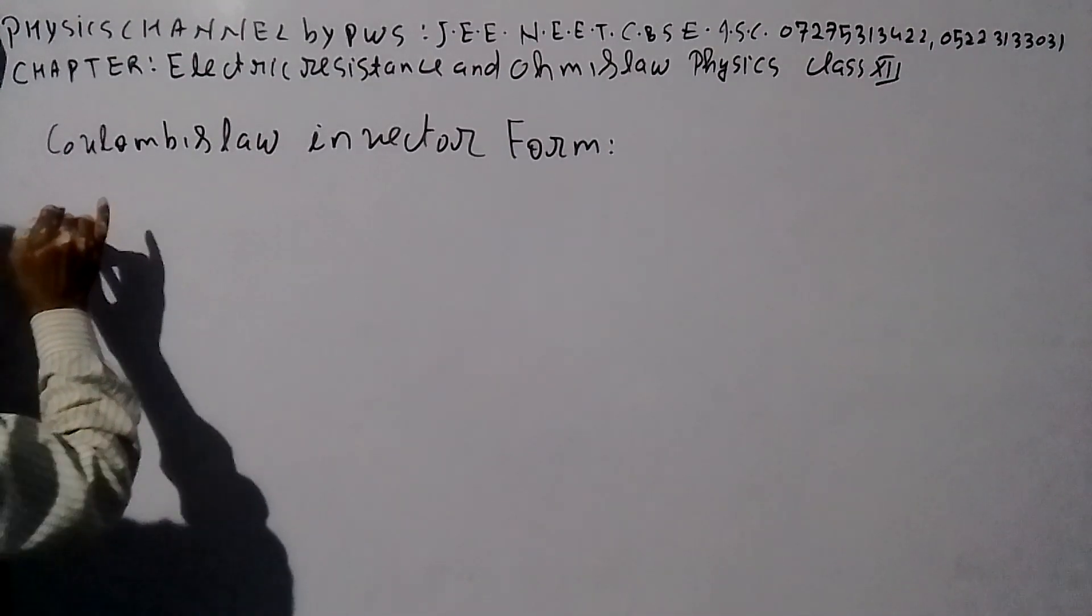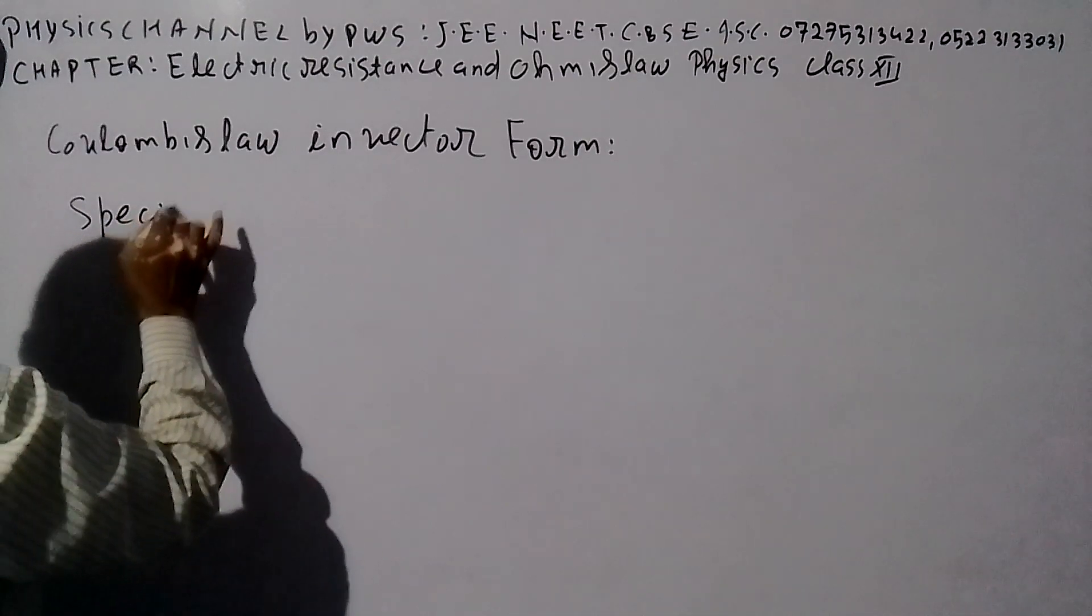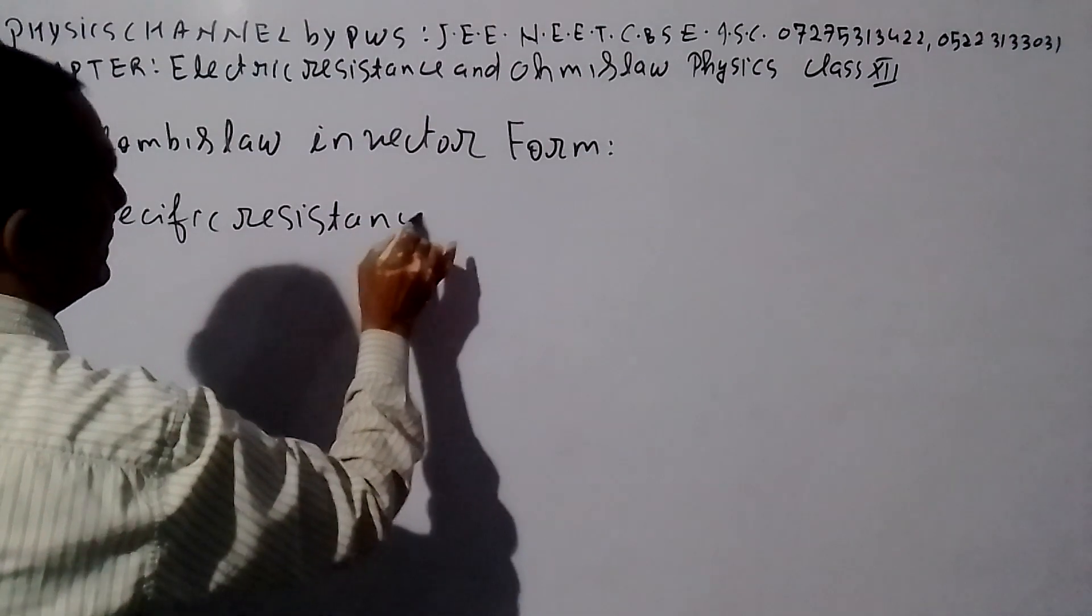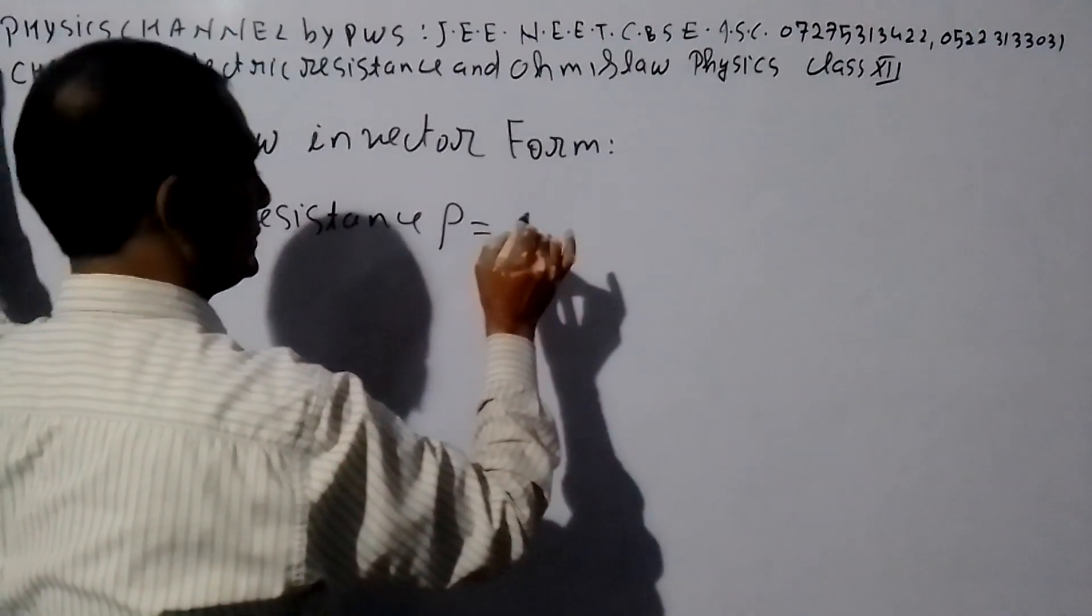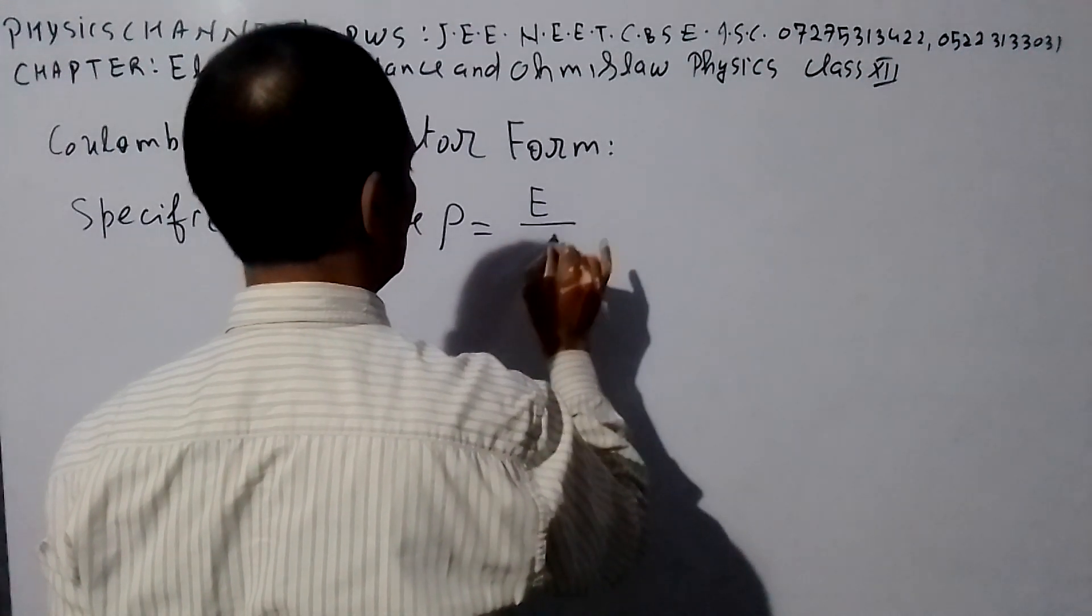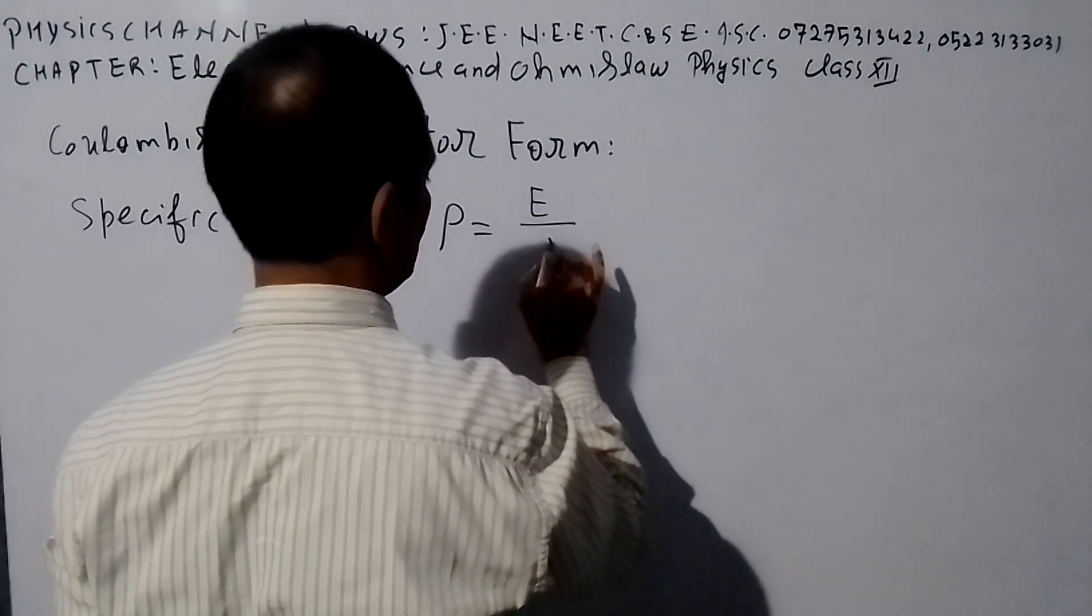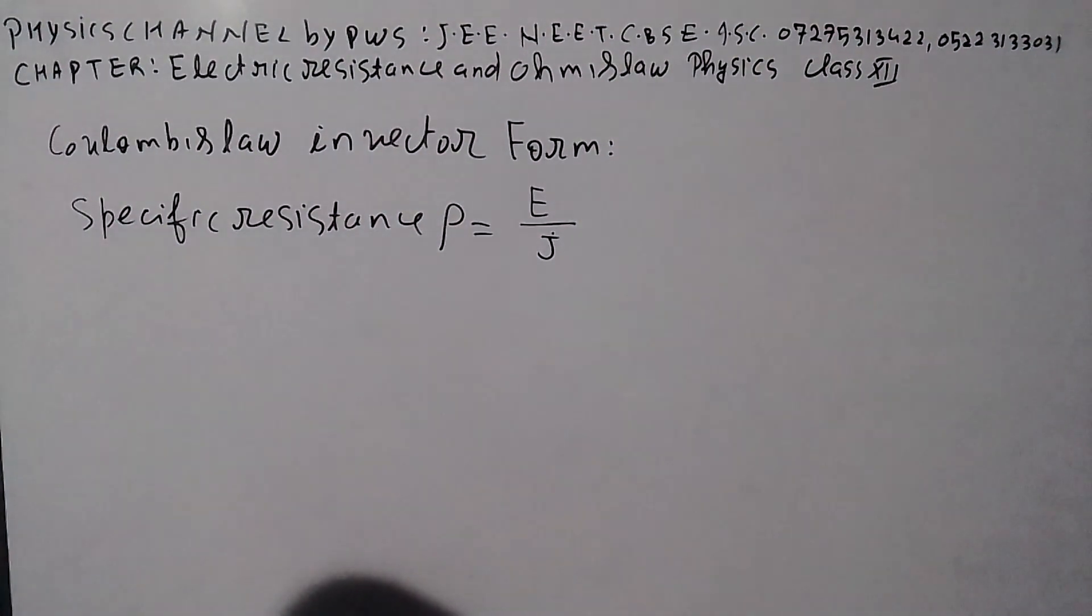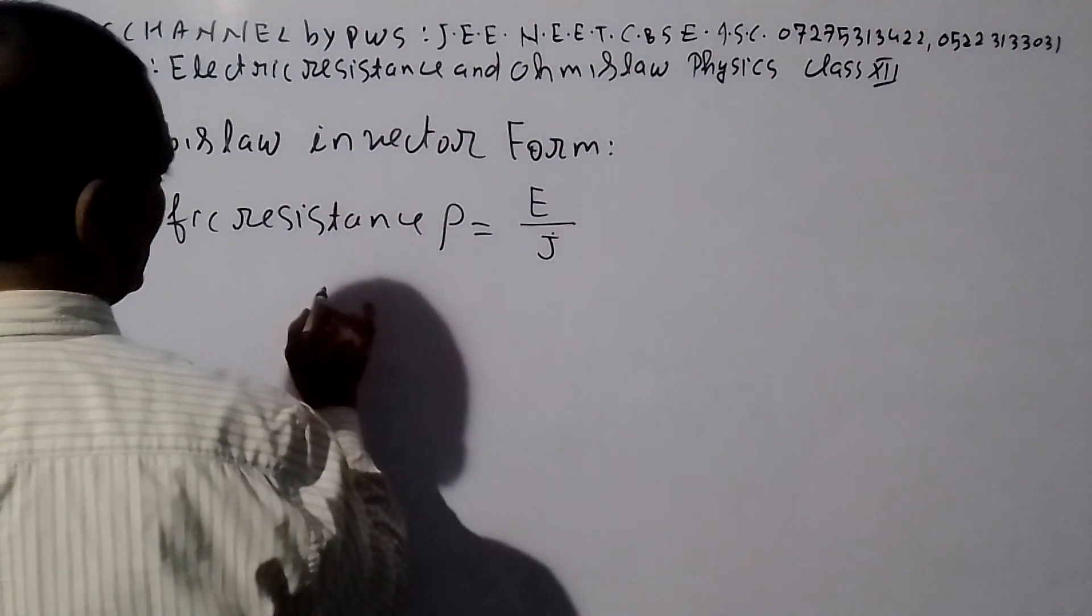So see, specific resistance, specific resistance. Rho, the ratio of electric field applied across the conductor to the current density, is called specific resistance.